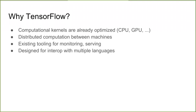Given that Haskell is so great, why use TensorFlow? Why not just write everything in pure Haskell? TensorFlow has computational kernels for adding things, doing convolutions, and various batch operations that are really well optimized for CPUs and GPUs. It also transparently supports sending data between different machines, which is useful for distributed systems, and has existing tooling for monitoring and serving. TensorFlow was also designed to interact with multiple different languages, which is useful for working in Haskell and potentially communicating between teams using different languages.